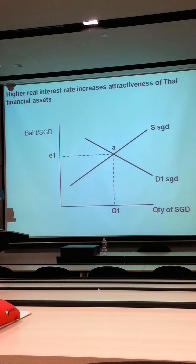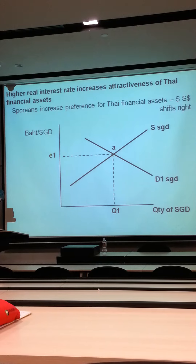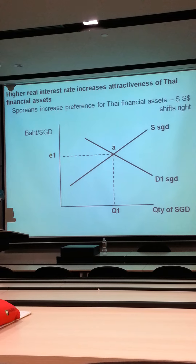So from the point of view of Singaporeans, the supply of Singapore Dollars shifts to the right, because Singaporeans increase their preference for Thai financial assets. Then they buy more, because it's more attractive. To do so, they sell Singapore Dollars to buy Thai Baht, in order to purchase the Thai financial assets.